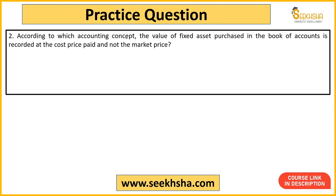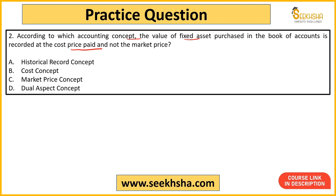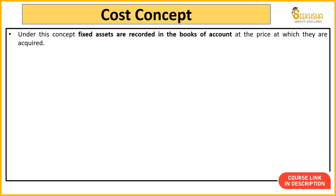Second question: According to which accounting concept is the value of a fixed asset, purchased and recorded in the book of accounts, recorded at the cost price paid and not the market price? Options: A: Historical Record Concept, B: Cost Concept, C: Market Price Concept, D: Dual Aspect Concept. The answer is Option B — Cost Concept. Cost price pe record karo — yahi Cost Concept kehta hai.